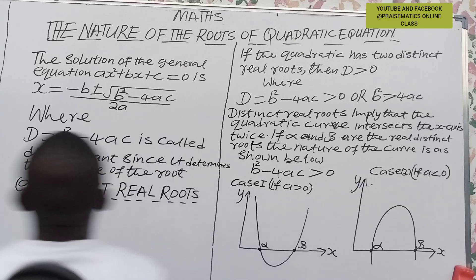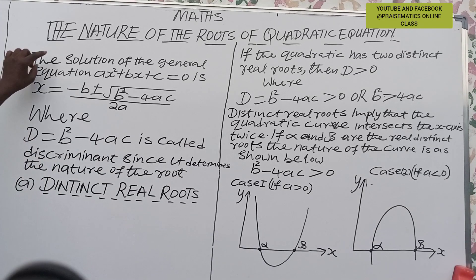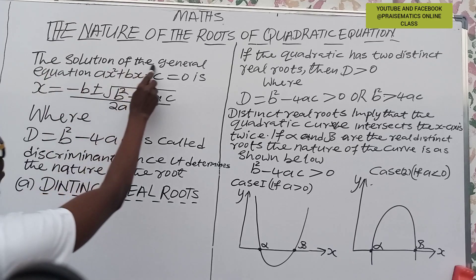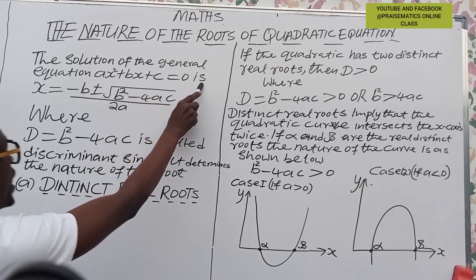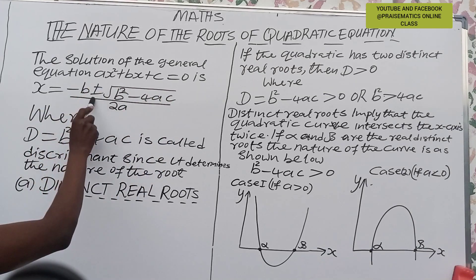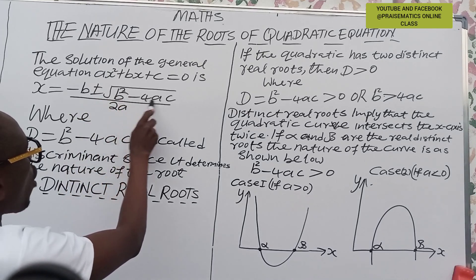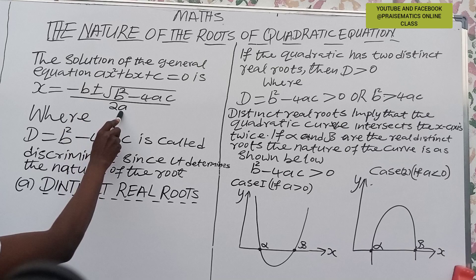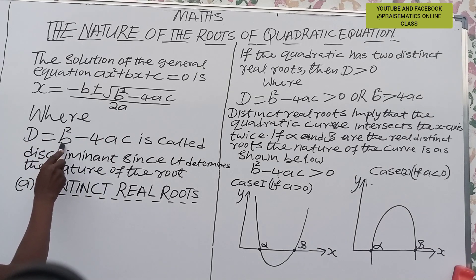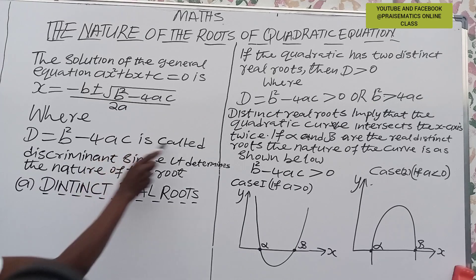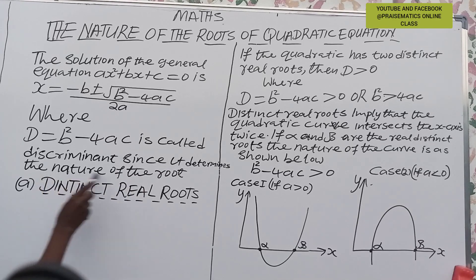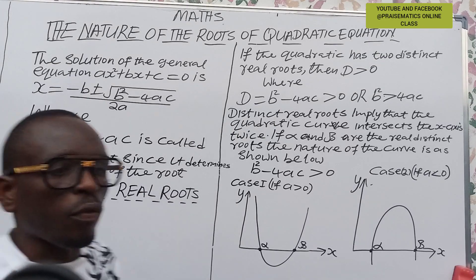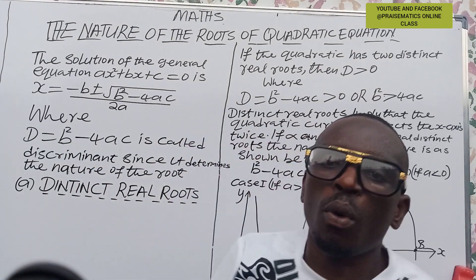The solution of the general equation ax² + bx + c = 0 is x = (−b ± √(b² − 4ac)) / 2a, where D = b² − 4ac is called the discriminant, since it determines the nature of the roots. We have about three methods of determining the nature of the roots of a quadratic equation.